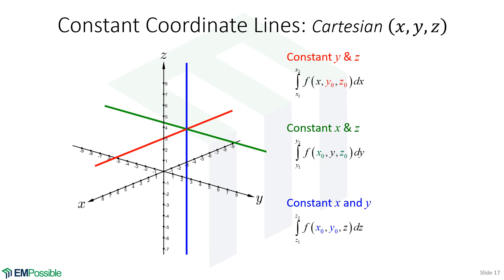We can have constant coordinate lines when we set two of our coordinates to be constants. In Cartesian coordinates, if we set y and z to be constants, we're integrating just along the x direction along the red line. If we fix x and z, we're integrating in the y direction along the green line — you can imagine doing these integrals along wires. If we fix x and y, we have a one-dimensional integral over z along the vertical line.